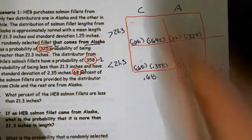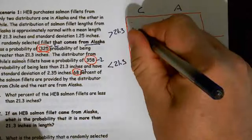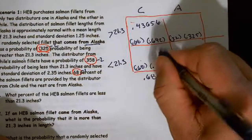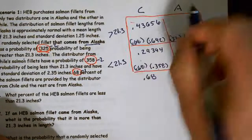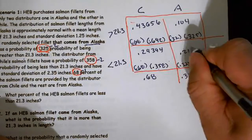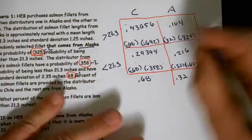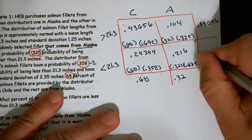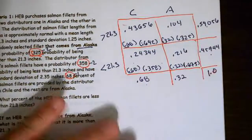When I multiply all this stuff out, I'm going to need to keep a bunch of decimal places. So: 0.43656, 0.24344 — all I'm doing is multiplying the values in each square. This is 0.104. And this is 0.216. Remember, this plus this equals this, this plus this equals this. Then we add across and we get 0.54056 and 0.45944. So these two sum to give me that one.